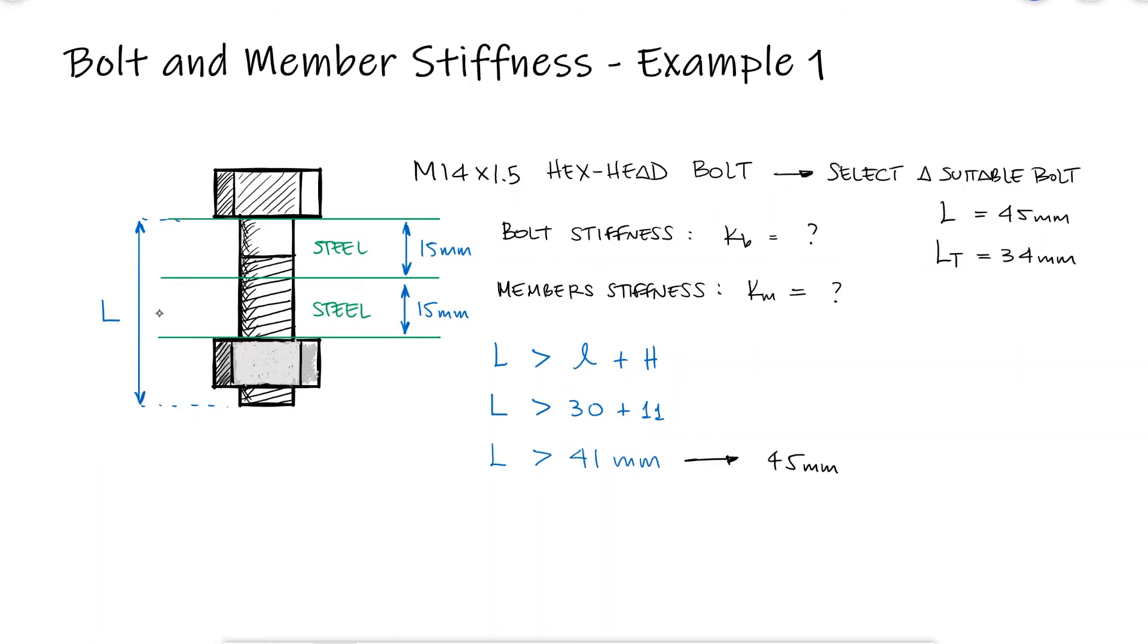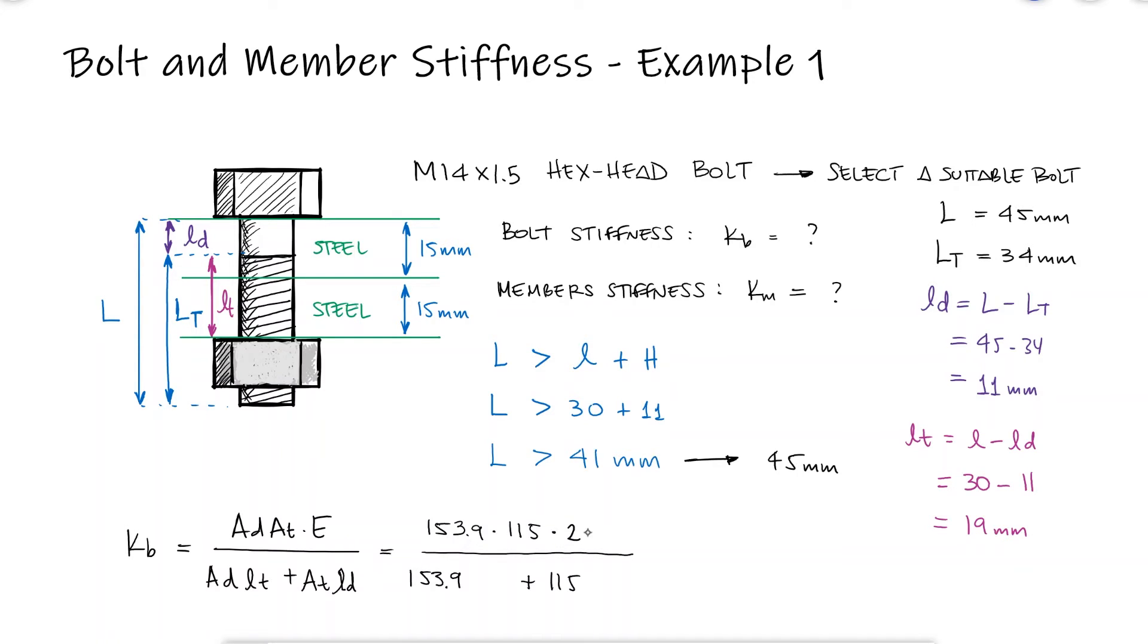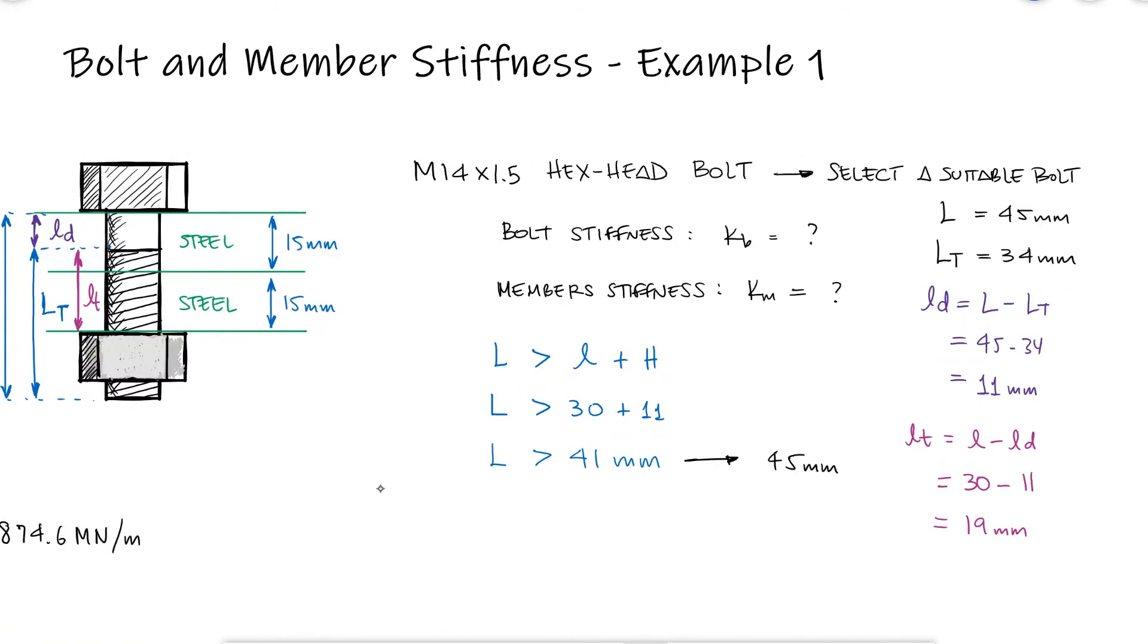With this information, we can proceed to calculate the bolt stiffness. The non-threaded length will be the difference between the total length and the threaded length, and the threaded length within the grip will be the grip minus the non-threaded length. With the area calculations procedure that we covered during the main video, the elastic modulus for the steel, and these two values, we find that the bolt stiffness is 875 MN per meter.